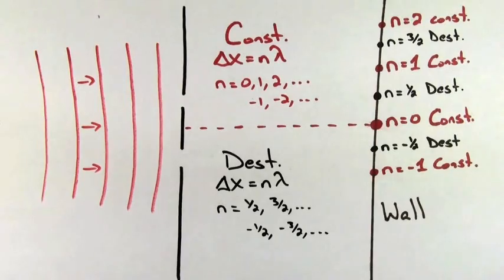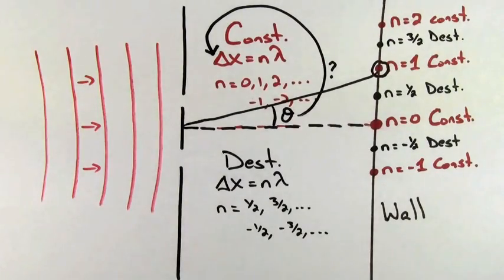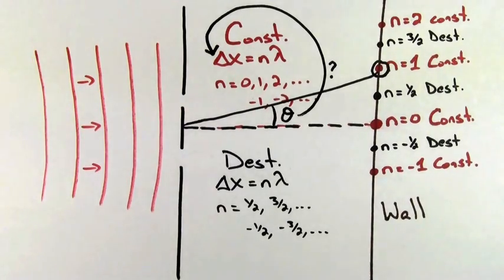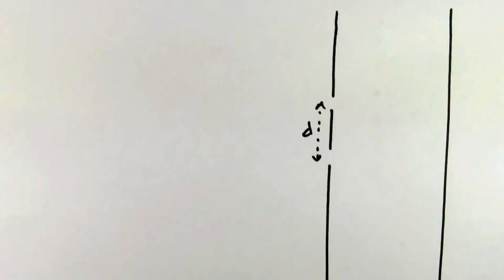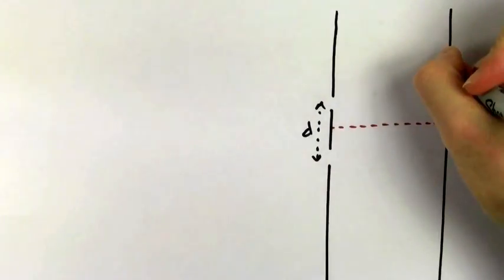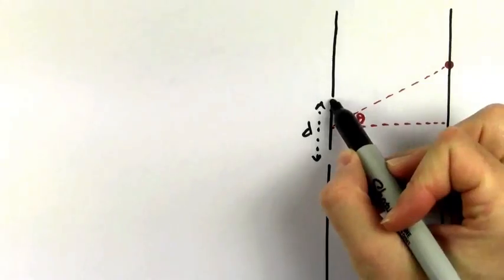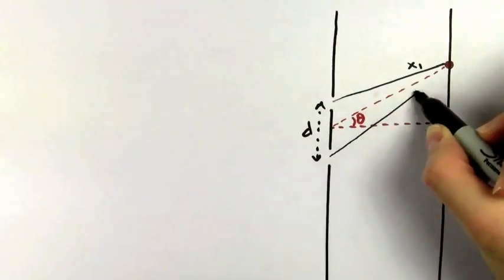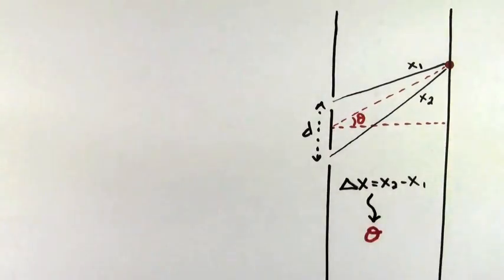Now, something that would really make our lives easier in tackling these problems is to develop a relationship between the path length difference and the angle from the central line. This would allow us to quickly determine which angles give constructive interference and which angles give destructive interference. To find this expression, let's call the distance between the two slits d. Every point on the wall is at a different angle from the central line. We know the waves will have to travel different distances to that point. The question is, how is the path length difference related to that angle?